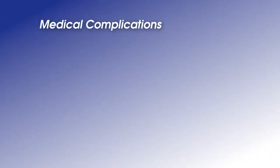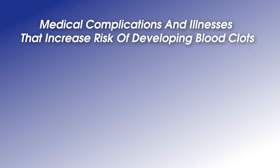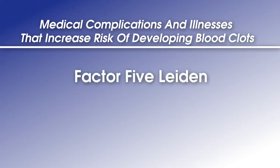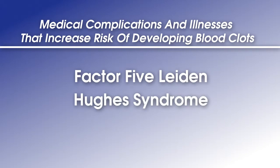There are also certain medical conditions that are associated with a higher risk of blood clots than normal. These diseases can easily predispose an individual to a pulmonary embolism. Some of the medical complications and illnesses that increase the risk of developing a blood clot include Factor V Leiden, Hughes syndrome, and thrombophilia, which is a genetic condition that increases the risk of blood clot formation.